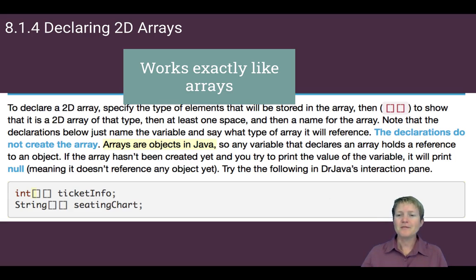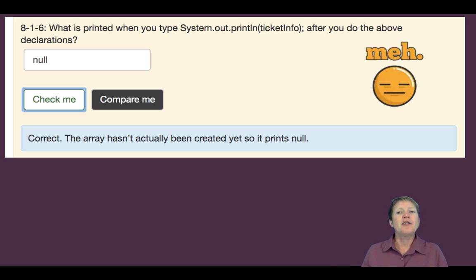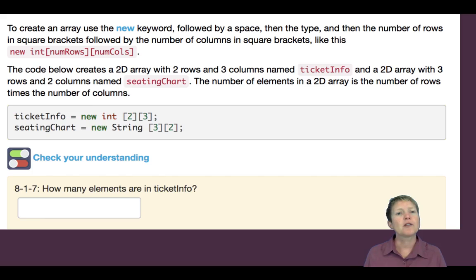All right. 8.1.4. Again, this is a fine paragraph. It's all correct. It's all true. Students need to know this, but basically you could just say 2D arrays work just like arrays. Ta dum dum. The only thing I'll say here is they're asking like, if you create a 2D array but you don't actually instantiate it, if you just declare it, it will have the value null in it. Yeah. We don't really care that much. And I don't think that would be tested. So there you are.